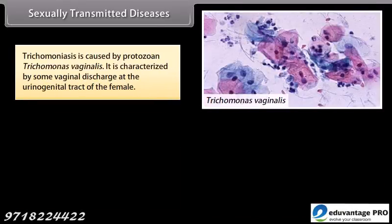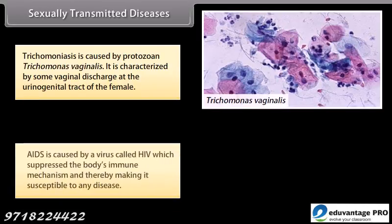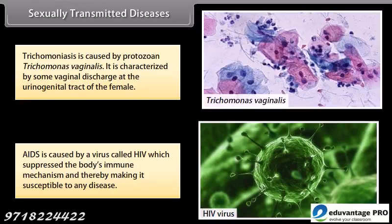Trichomoniasis is caused by the protozoan Trichomonas vaginalis. It is characterized by vaginal discharge at the urinogenital tract of the female. AIDS is caused by a virus called HIV, which suppresses the body's immune mechanism, thereby making it susceptible to any disease.